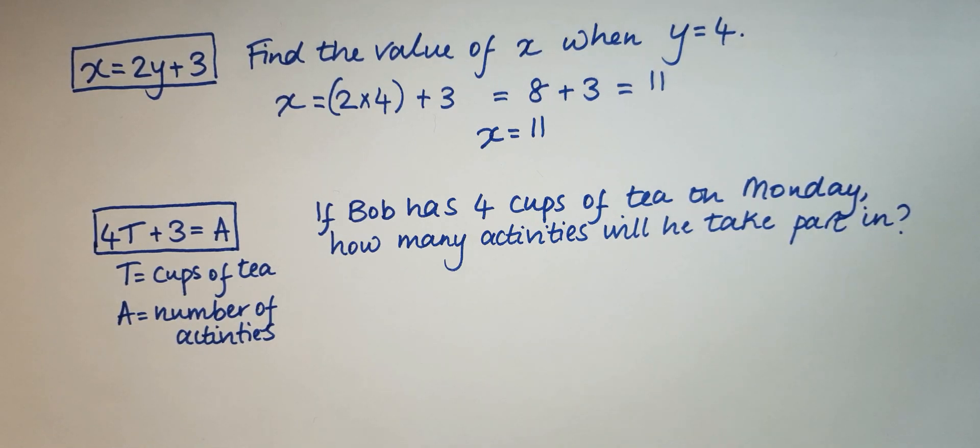Now it tells us the day and it's talking about activities, but we could think hang on, what about Tuesday, what about Wednesday, what about the rest of the week, and what kinds of activities is he taking part in? But what we need to focus on is just simply the number of activities. So don't get confused with the question, just look at what it's simply asking you.